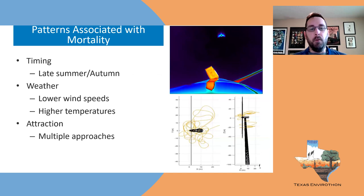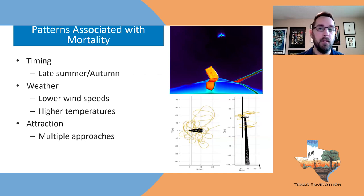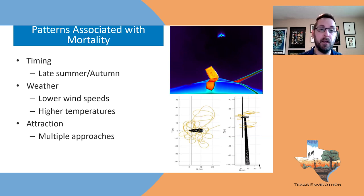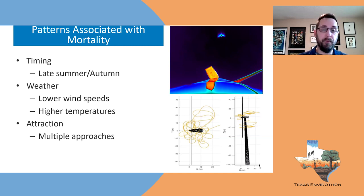Bat fatalities don't occur year-round. Late summer and early fall — roughly July 15 through October 15 — is when we see the highest fatalities, during fall migration and when these bats are mating. Something about those two life-cycle events makes them more susceptible to collisions with wind turbines. Weather conditions also play a role: during periods of relatively low wind speeds and high temperatures, we see more collision events than at higher wind speeds or colder temperatures.